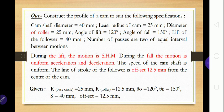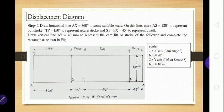During the outstroke the motion is simple harmonic motion, and during the return stroke the motion is uniform acceleration and deceleration. The speed of the camshaft is uniform. The line of stroke of the follower is offset 12.5 mm from the center of cam. In problems there may be different combinations of motions for outstroke and return stroke — the change will be in the displacement diagram accordingly.